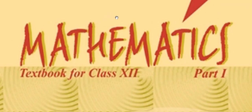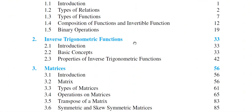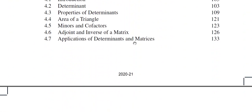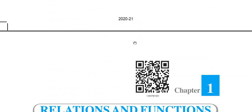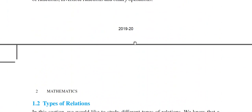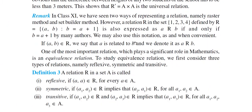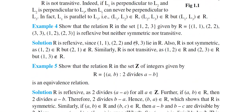Hello students, this is the 8th lecture on Mathematics for Class 12th from NCERT Part 1. So far we have discussed the first chapter on relations — types of relations and types of functions. In type of functions, we mainly discussed one-one type and onto type of functions — when a function is called one-one and when it is called onto.